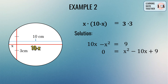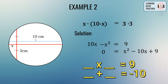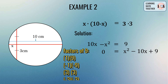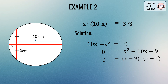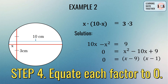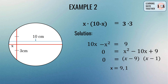Since this is a quadratic trinomial, we need factors of 9 that multiply to 9 and add to negative 10. The factors of x squared minus 10x plus 9 are (x minus 9) and (x minus 1), giving us the values of x as 9 and 1.